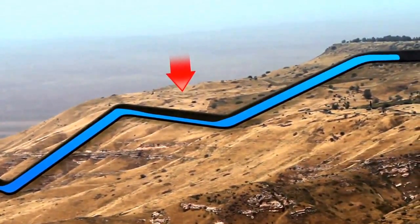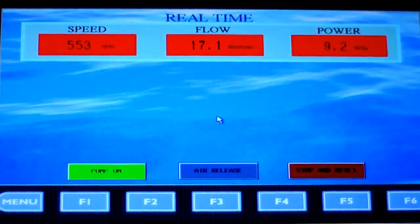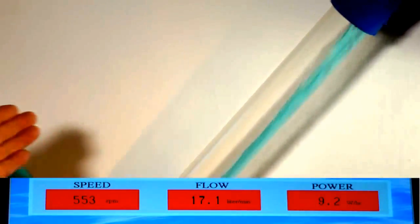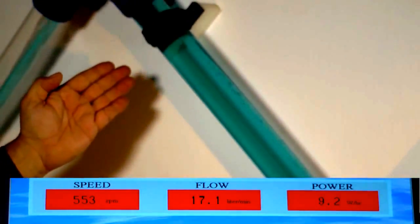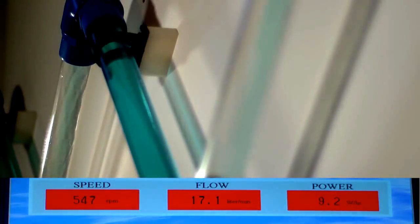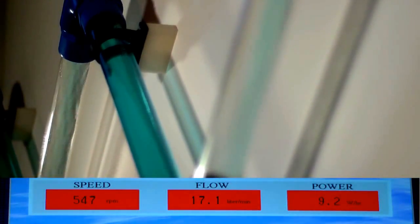Currently, the data on the control screen indicates that to generate a flow of 17.1 liters per minute, the pump motor must run at around 550 RPM, which consumes energy at the rate of 9.2 watts per hour.